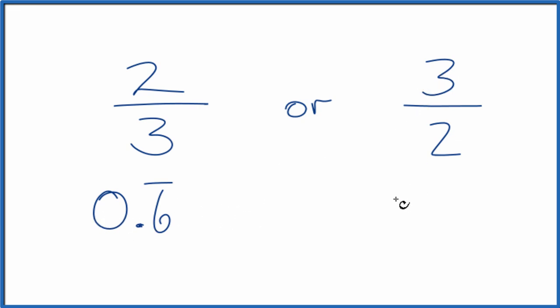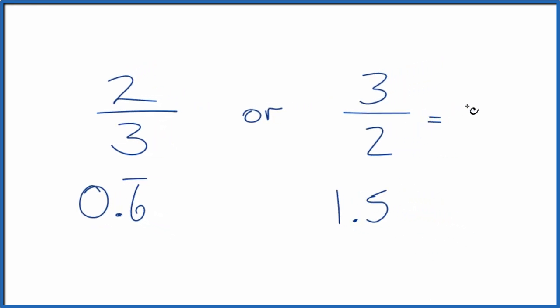Three divided by two, that's 1.5. We knew it would be larger than one. Turns out that this is equal to one and one half. If you want a mixed number, 1.5.